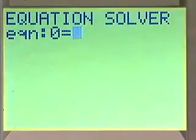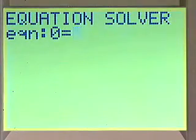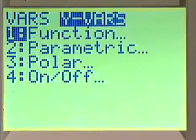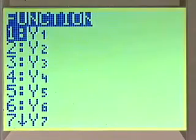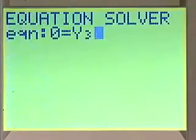Remember, we set up our Y equals menu so that Y1 minus Y2, which is what we want to have solved, is in the Y3 menu. So we'll go back to our calculator, and we'll push VARS, Y-VARS, function, and then we'll push 3 for Y3.